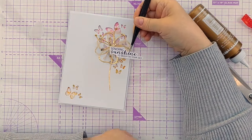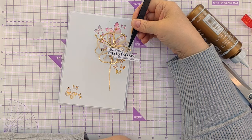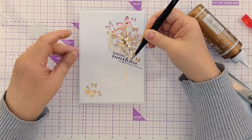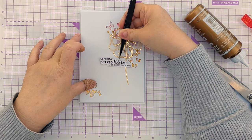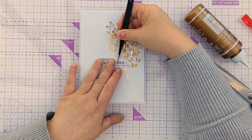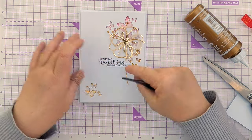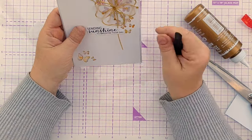So my sentiment says sending sunshine to brighten your day, which I think goes well with the colours on here. I've popped some glue on the back with a couple of little bits of card to support it because it's going to go over this little bit of stem.